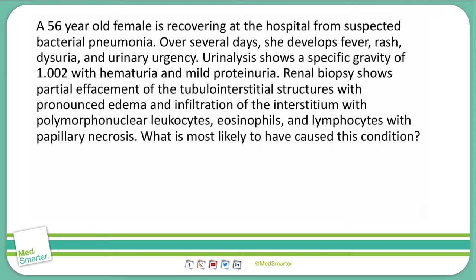A 56-year-old female is recovering at the hospital from a suspected bacterial pneumonia. Over several days, she develops fever, rash, dysuria, and urinary urgency. Urinalysis shows a specific gravity of 1.002 with hematuria and mild proteinuria. Renal biopsy shows partial effacement of the tuberointerstitial structures with pronounced edema and infiltration of the interstitium with polymorphonuclear leukocytes, eosinophils, and lymphocytes with papillary necrosis.